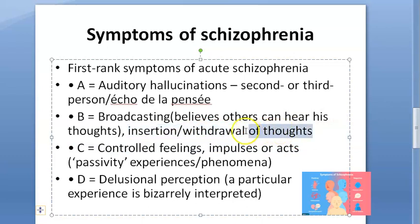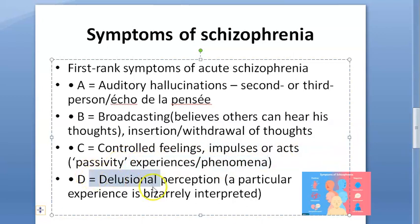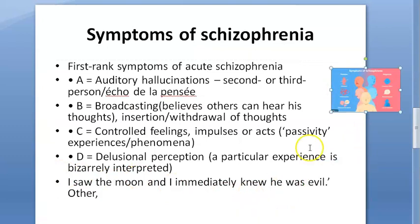Next is controlled feelings, impulses, or acts - the patient has either controlled feelings or impulses, so either there is a diminished or heightened kind of response. Then there is delusional perception, where a particular experience is bizarrely interpreted. The textbook example given is: 'I saw the moon and I immediately knew that he was evil' - so basically he interprets it bizarrely.